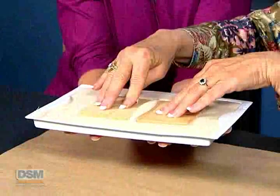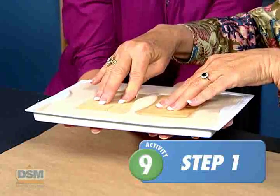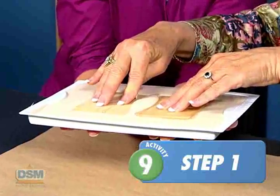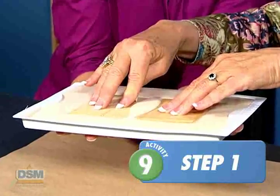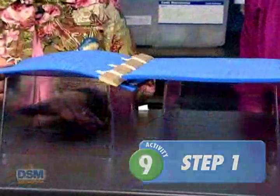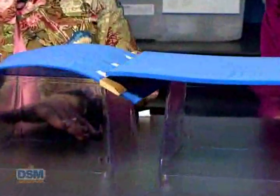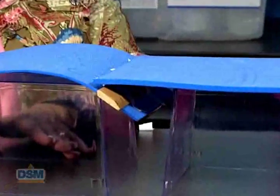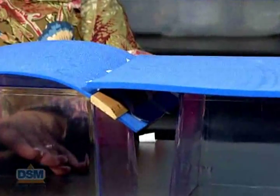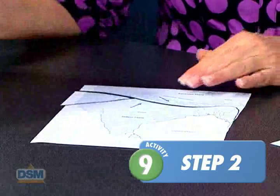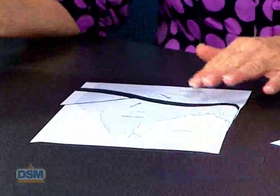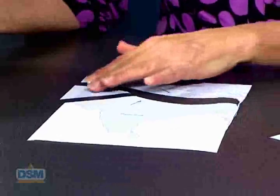In the previous lessons, we learned what happens when oceanic plates move away and when continental plates and oceanic plates collide. Each student will be given a copy of Activity Sheet 7 and directed to cut along the bold line and fit it together again.